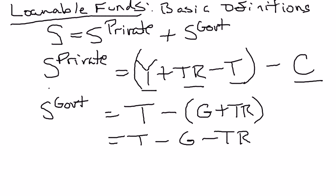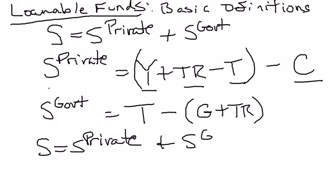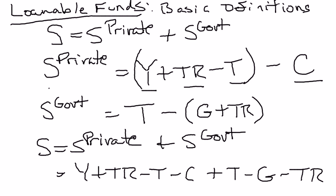National savings is private savings plus government savings, which means it's going to be income plus transfer payments minus taxes minus consumption, plus whatever government savings is, which is taxes minus government spending minus transfer payments. Now there's going to be a lot of cancellations here. We get positive transfer payments here, negative transfer payments here, so let's go ahead and cancel those. We have positive taxes here and negative taxes here, so let's cancel those. And so what we're left with is: national savings is income minus consumption minus government.